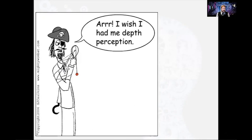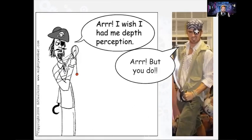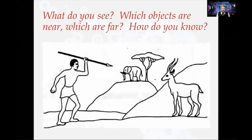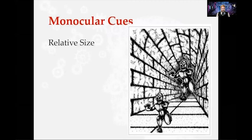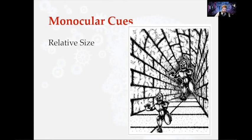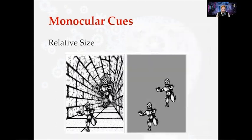Interestingly, you do have depth perception even if you only have one eye. Monocular cues include relative size: when we look at an image with two similar objects in a scene, the one farther back tends to look larger due to background context, but if you remove the background they're actually the same size. The background changes our perception of how far away each object is.